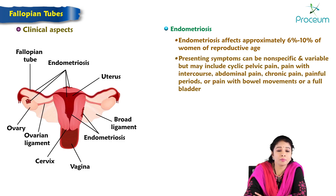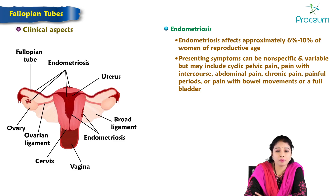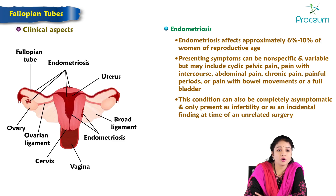Presenting symptoms can be non-specific and variable, and may include cyclic pelvic pain, pain with intercourse, abdominal pain, chronic pain, painful periods, or pain with bowel movements or a full bladder. The condition can also be completely asymptomatic and may present as infertility or as an incidental finding at the time of unrelated surgery.